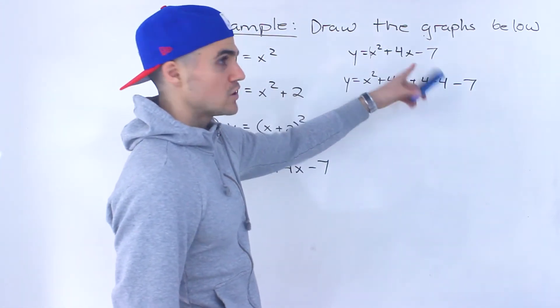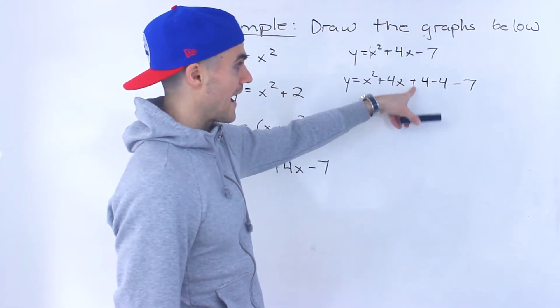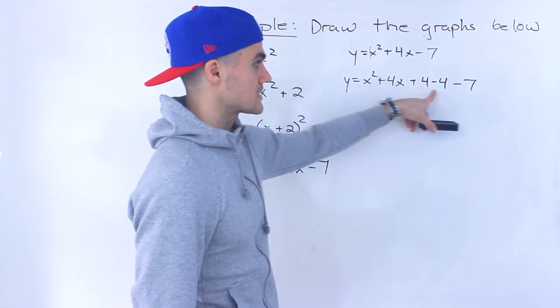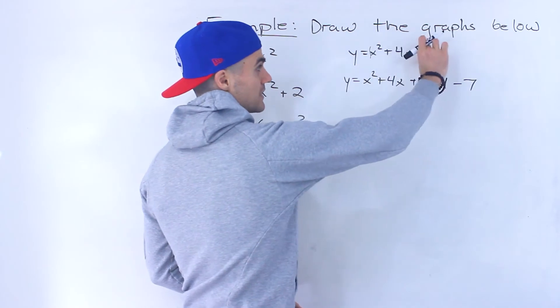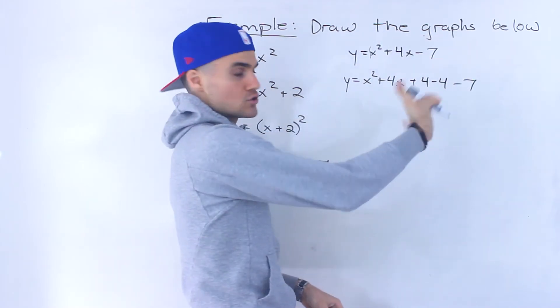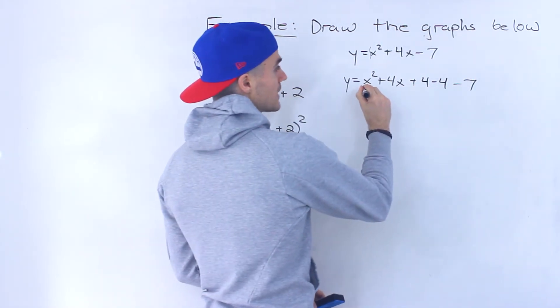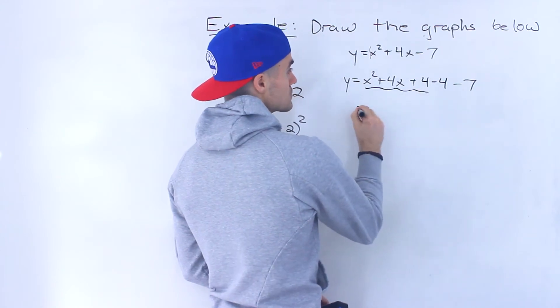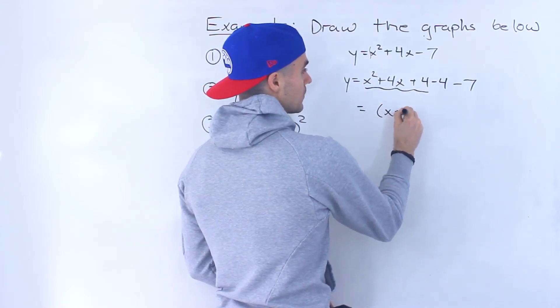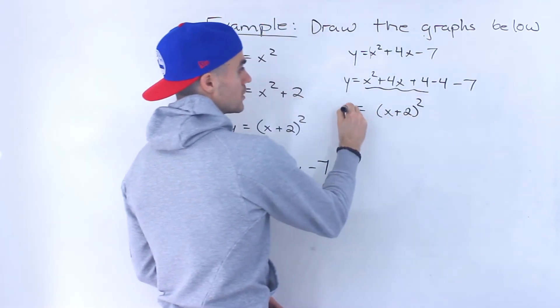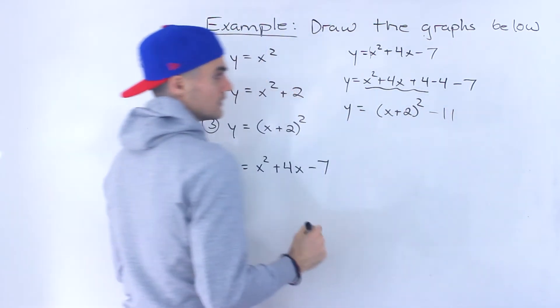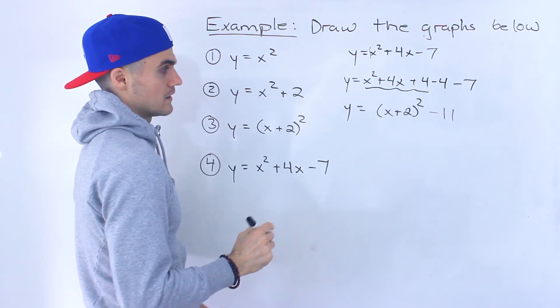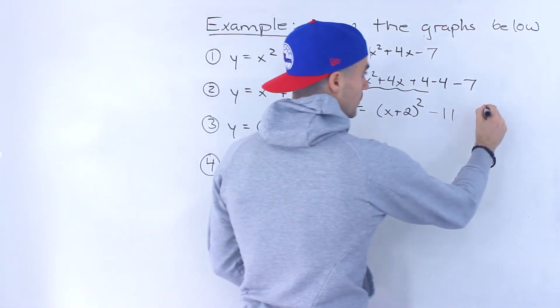And then we have to add that minus seven at the end. So we're adding that b over two squared term. We're adding it and then subtracting it. So it's like this is zero. So it's the exact same thing as this. We're just adding more to the function. The reason why we do that is because now these three values, it's always going to be a perfect square trinomial. And then minus four minus seven, that gives us negative 11.